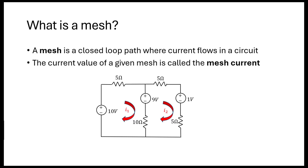So what is a mesh? A mesh is a closed loop path where a current flows in a circuit. We can call these the meshes, and the current of any given mesh is called the mesh current. The goal of mesh analysis is to solve for the unknown mesh currents within a circuit.